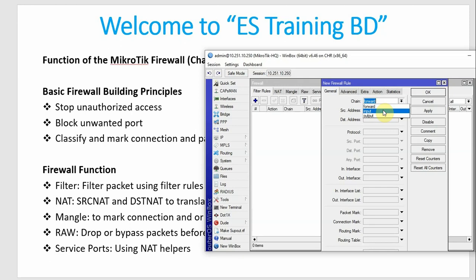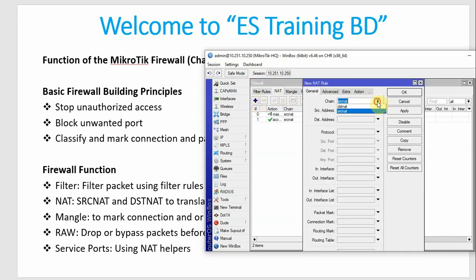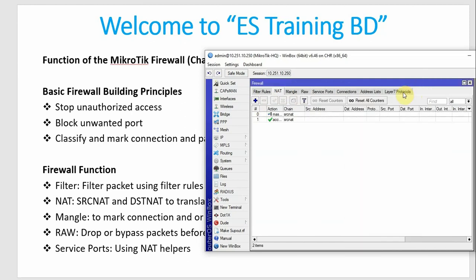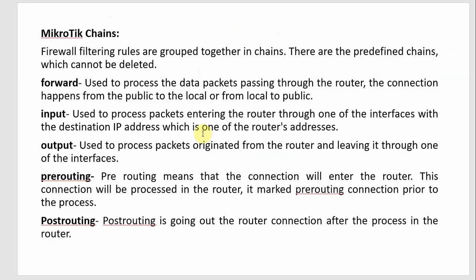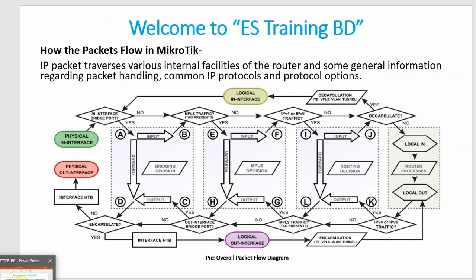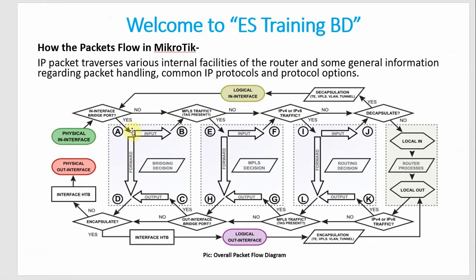There are three main chains: Forward chain, Input chain, and Output chain. We have to select the chain and configure the destination NAT and source NAT. The MikroTik chain is a sub-process — Forward chain, Input chain, and Output chain are the sub-processing chains.